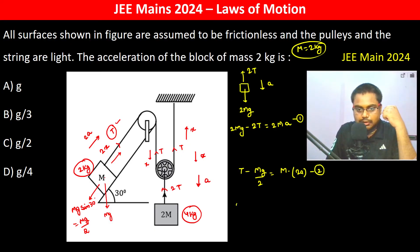So therefore it's going to be 2mg minus 2T, multiply this entire thing by 2, plus 2T minus mg is equal to 2ma plus 4ma. Gone, gone. This is mg is equal to 6ma. m is gone, so a is equal to g by 6.